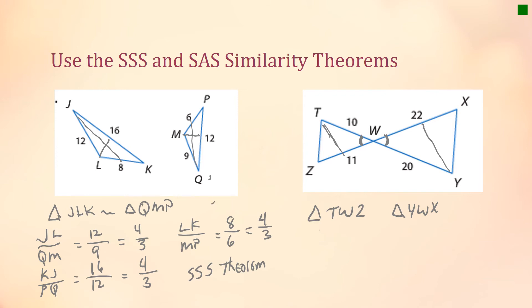I've just got to evaluate the two sides because I've got an included angle here. What's the proportion of TW to YW? TW is 10, YW is 20. That easily, we can easily see that's one half. And how about WZ to WX? WZ is 11 and WX is 22. That proportion is also one half.